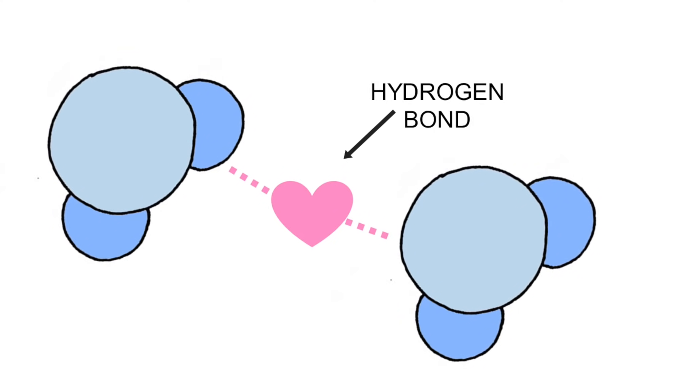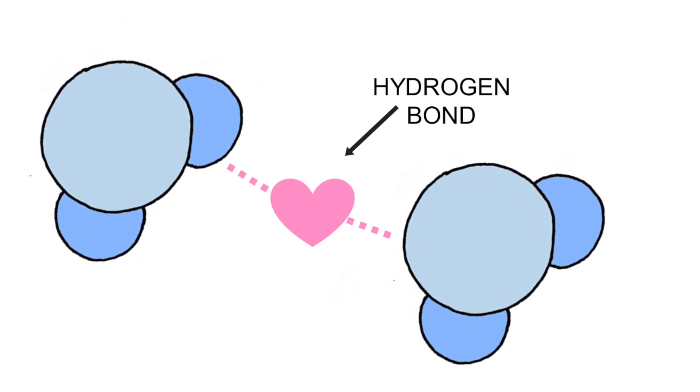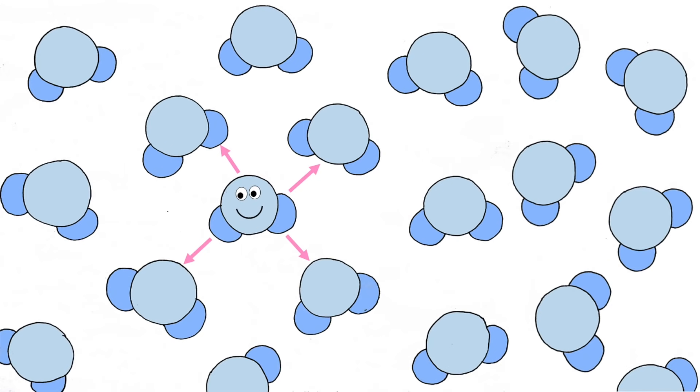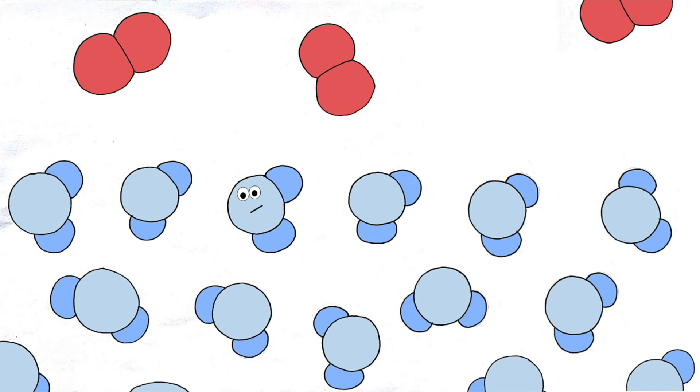Water molecules are attracted to each other and they hold on to each other with hydrogen bonds. For a water molecule that's under the surface, it can form hydrogen bonds with all of its neighbors. And those forces pulling it to this neighbor or to that neighbor are all balanced. It's a happy camper. But for water molecules on the surface, things are different.